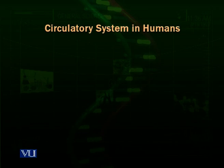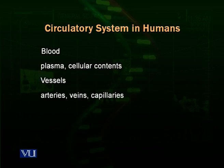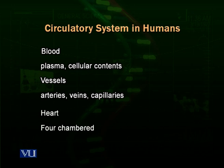The circulatory system in human beings serves all the requirements for the transport of materials within the body and sometimes exchange with the environment. It consists of three major constituents: the blood, the circulatory fluid; the vessels, the vascular system in which the blood, the liquid tissue, can flow; and the heart, the pumping organ.